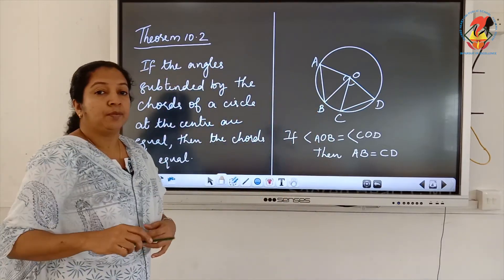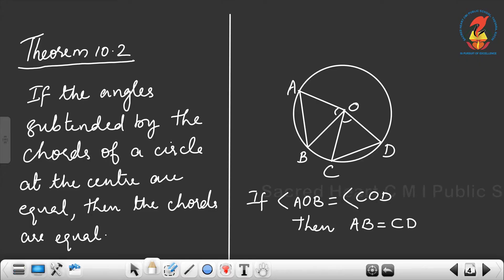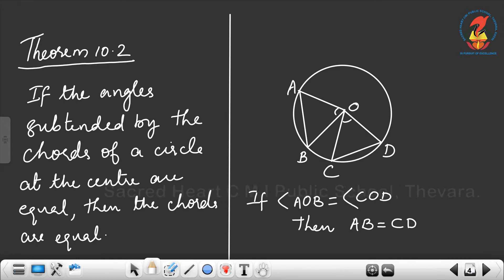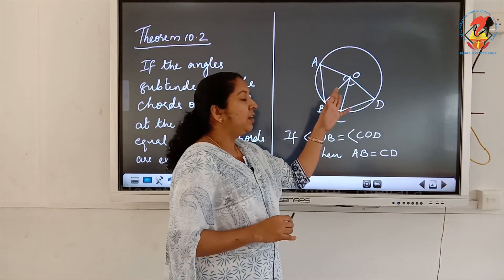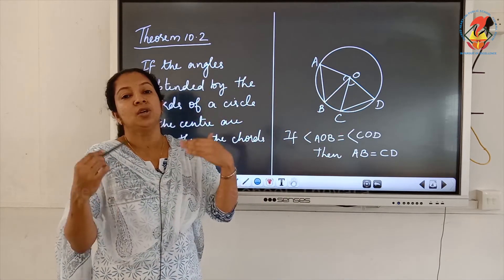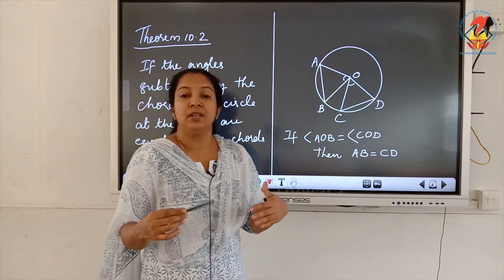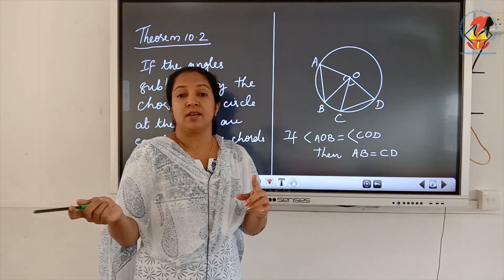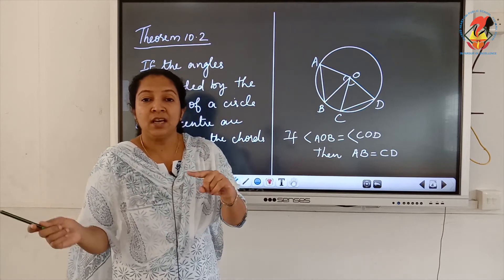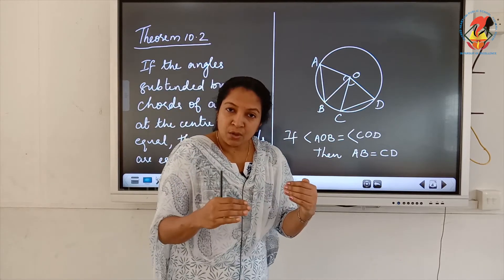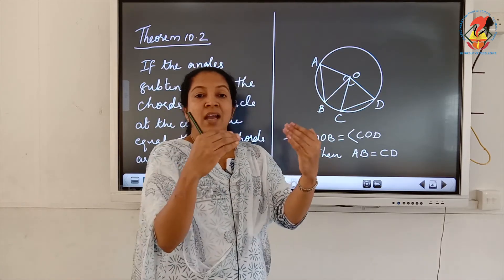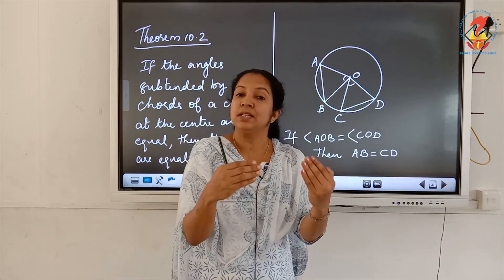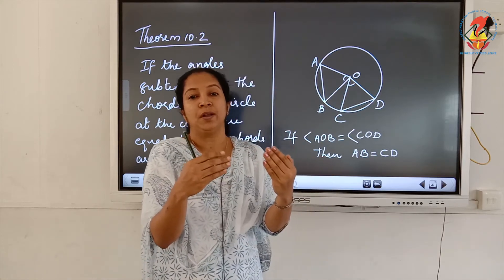Second theorem (converse): If the angles subtended by chords of a circle at the center are equal, then the chords are equal. That is the converse of the previous theorem — there, equal chords give equal angles; here, equal angles give equal chords.